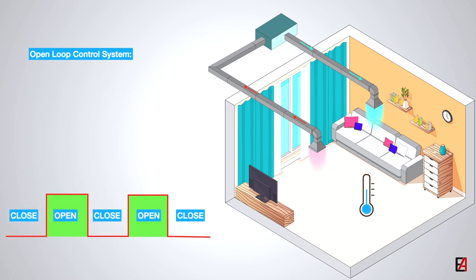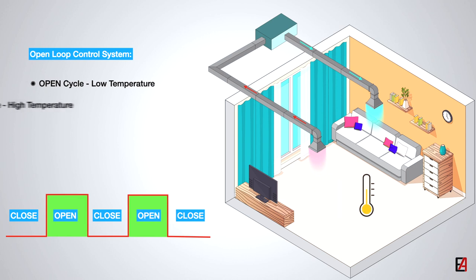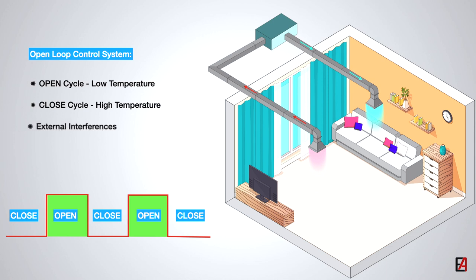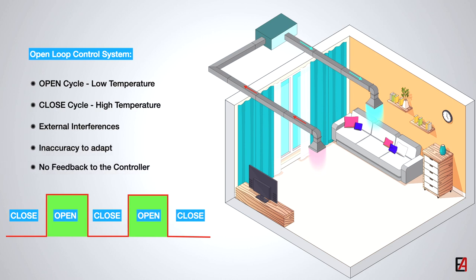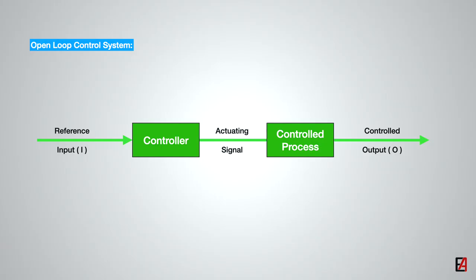During the control valve open cycle, the room temperature will be below the desired temperature, and during the control valve close cycle, the room temperature will be above the desired temperature. As it is impossible to calculate the amount of time required to keep the control valve open or closed to achieve the desired temperature due to external interferences such as outside temperature, varying chilled water temperature, etc., it is clear that the desired room temperature cannot be achieved with this type of control system due to inaccuracy in adapting to external interferences and unavailability of any feedback signal to compare with the desired space temperature.